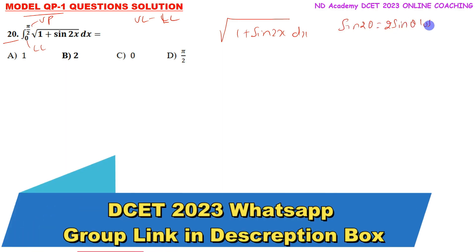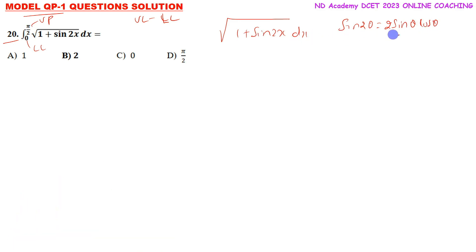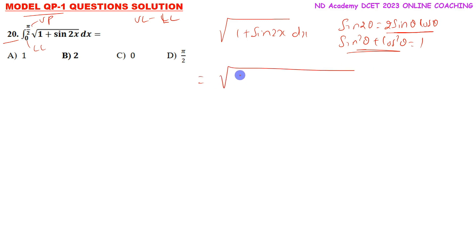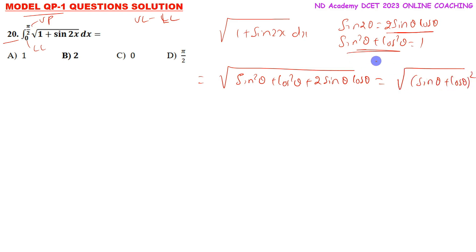We use sin 2x equals 2 sin x cos x, and the identity sin squared x plus cos squared x equals 1. So 1 plus sin 2x equals sin squared x plus cos squared x plus 2 sin x cos x, which equals (sin x plus cos x) squared. Using the formula a squared plus b squared plus 2ab equals (a plus b) squared.